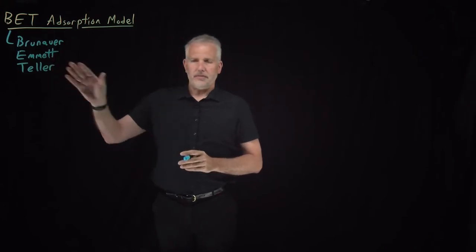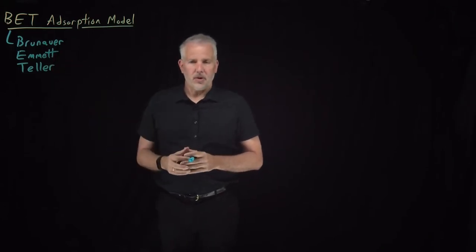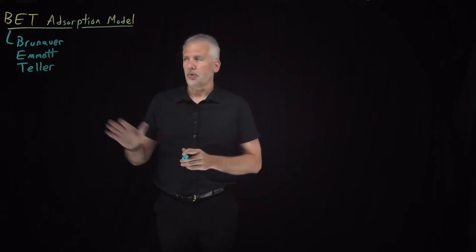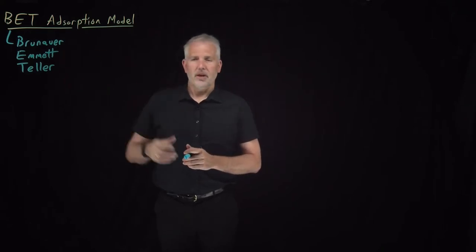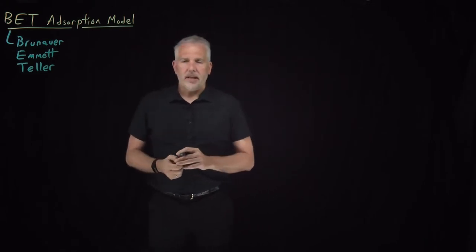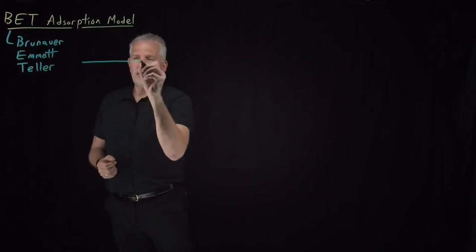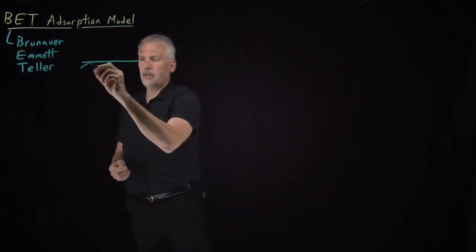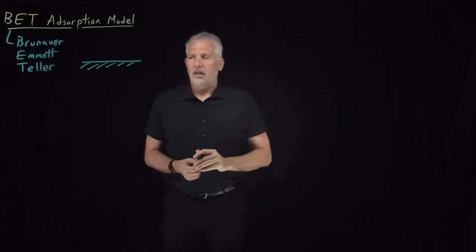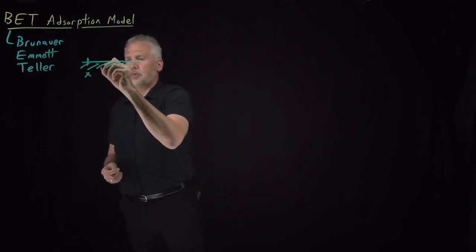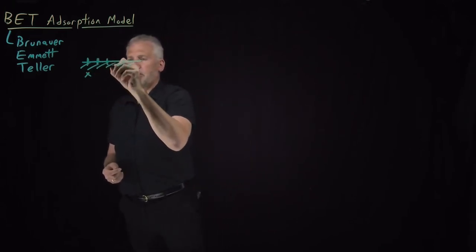This model is probably the more commonly used model for studying things like measuring surface area using the technique of adsorption, so it's important to understand what's behind it. Like the Langmuir model, it's a lattice model. We have some surface that we divide up into lattice sites — specific positions where we can adsorb molecules or not.